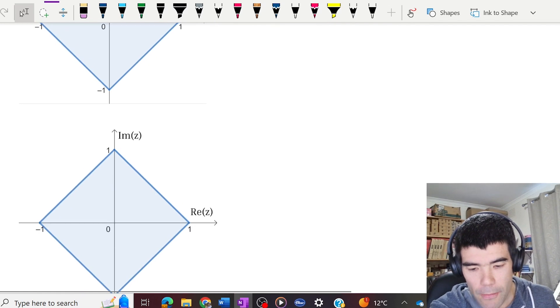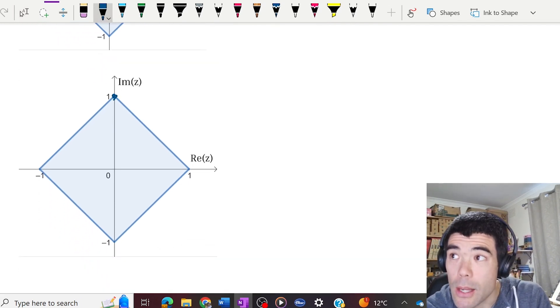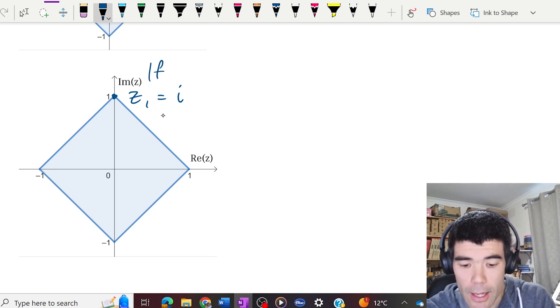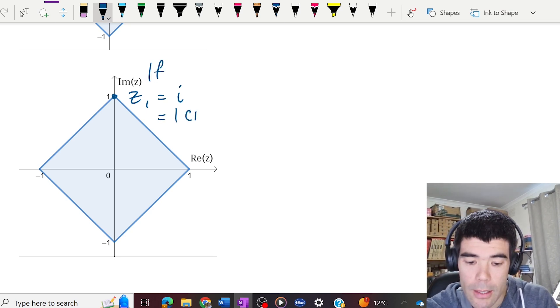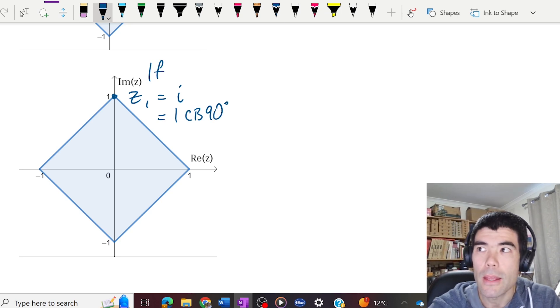So we can simplify the problem a bit by imagining, let's say z1 is up here. If z1 is up here at i, that is 1 cis 90 degrees. And then think of what would happen to the product z1 z2.